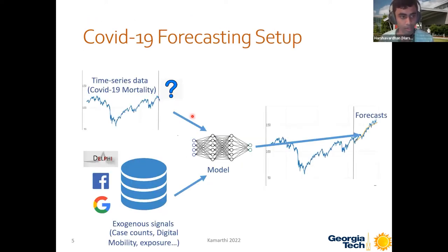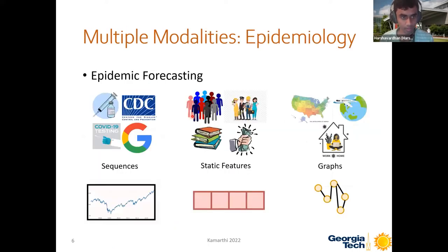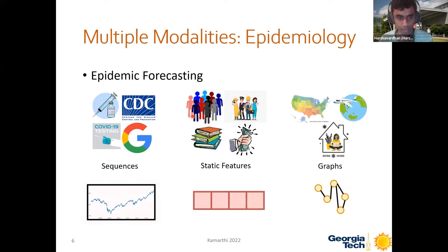In COVID-19 forecasting, we have the previous data of COVID-19 mortality and some exogenous features like case counts, digital signals like search queries, and mobility signals. We predict the future mortality of COVID-19. These exogenous features can come in different modalities — in epidemic forecasting there could be sequences like number of cases and deaths, static features like demographics and unemployment, or graphs like mobility graphs across regions or travel graphs.